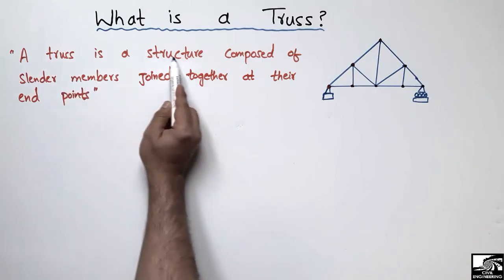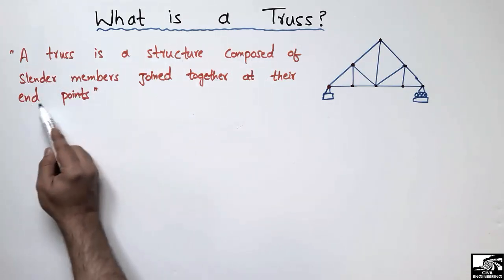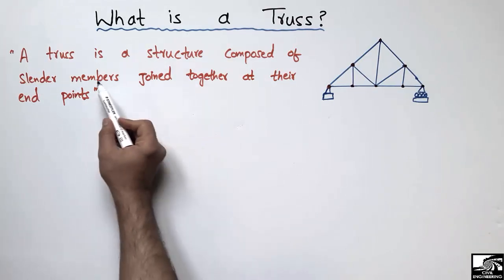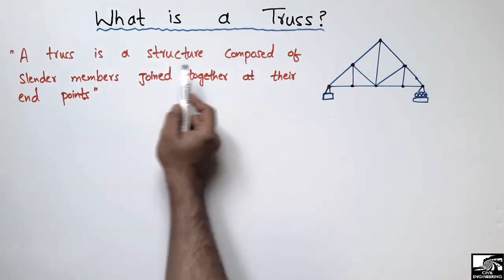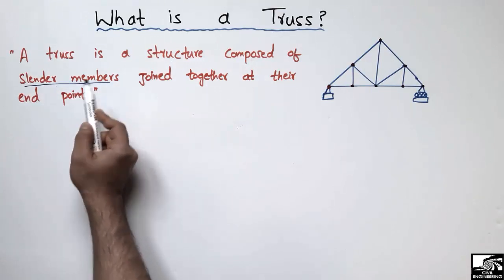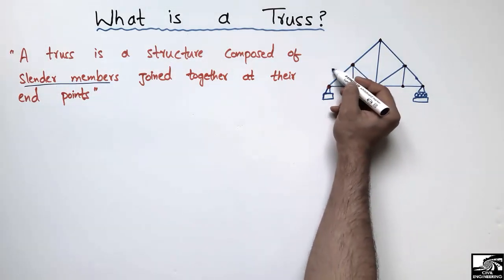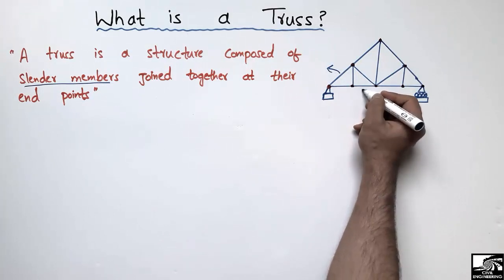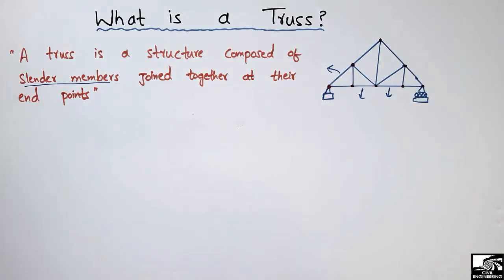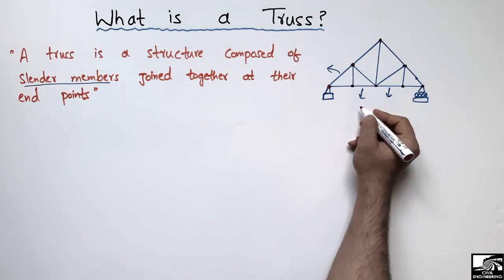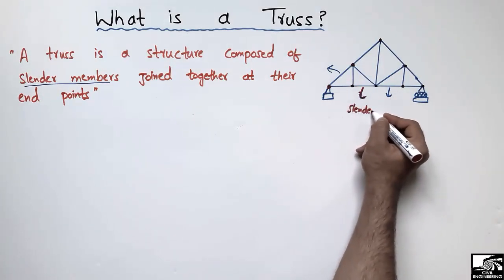A truss is a structure composed of slender members joined together at their end points. These slender members are the members of a truss — they are very thin in their cross section.